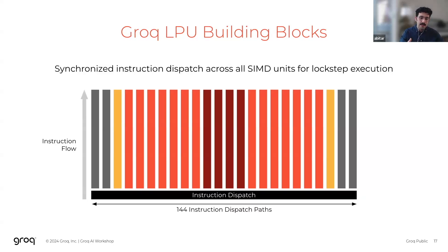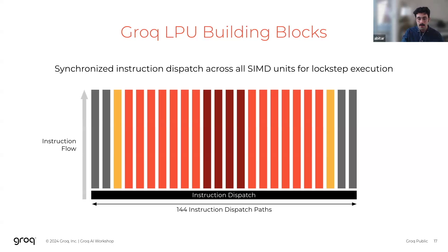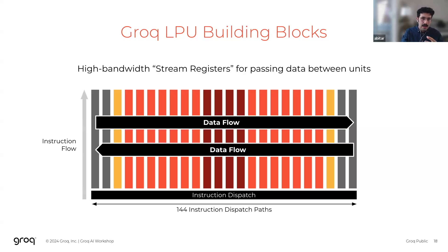Each functional unit has its own instruction dispatch unit, but crucially, each of the instruction dispatch units are operating in lockstep, offering a common time domain across the different functional units, which is essential for empowering our software. And finally, we introduce stream registers for high bandwidth data passing between the different functional units.